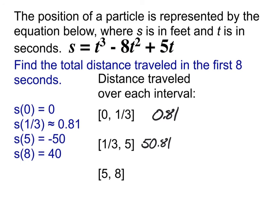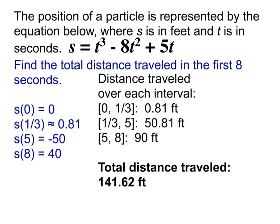And finally between 5 and 8, we're going from negative 50 up to 40, so the total distance is 90. Now we know how far it traveled within each of the three intervals, and we can add them up. The total distance traveled is 141.62 feet. Remember, our natural instinct might have been to just find the positions at 0 and 8, the endpoints. But remember why that doesn't work — this is not a linear relationship, it's got ups and downs, and we have to account for those.